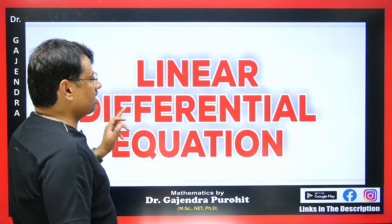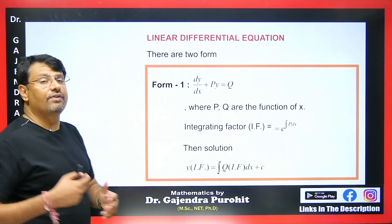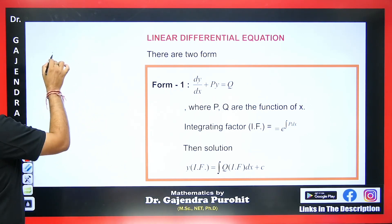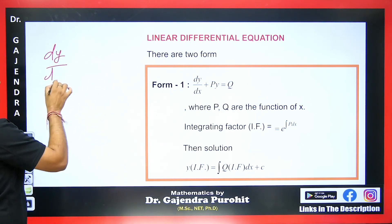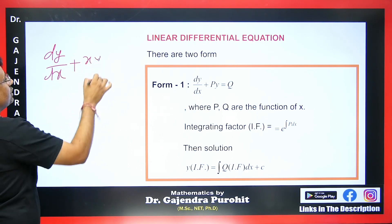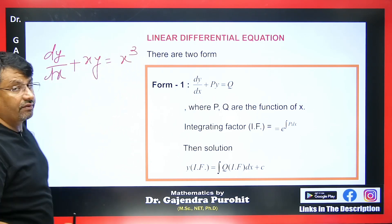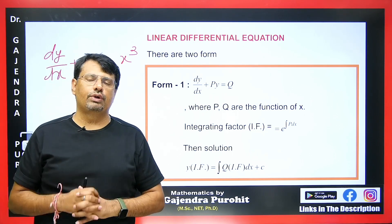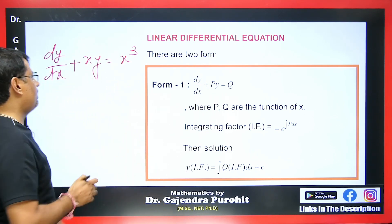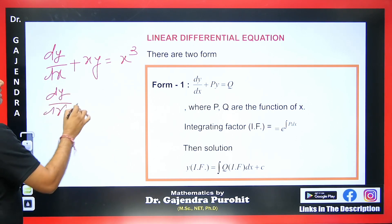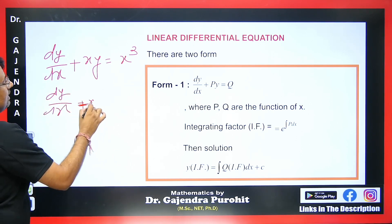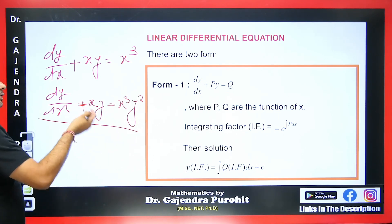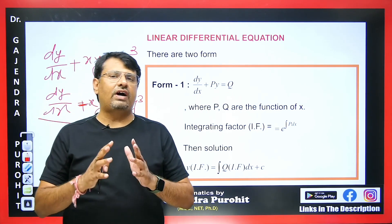How can we identify whether the differential equation we have is linear in x or y? If we have dy/dx + xy = x³, here y is given only once and x is given twice. That means this differential equation will be linear in y. Now if the equation is dy/dx + xy = x³y³, then y and x both appear twice, which indicates the expression is not linear in y.